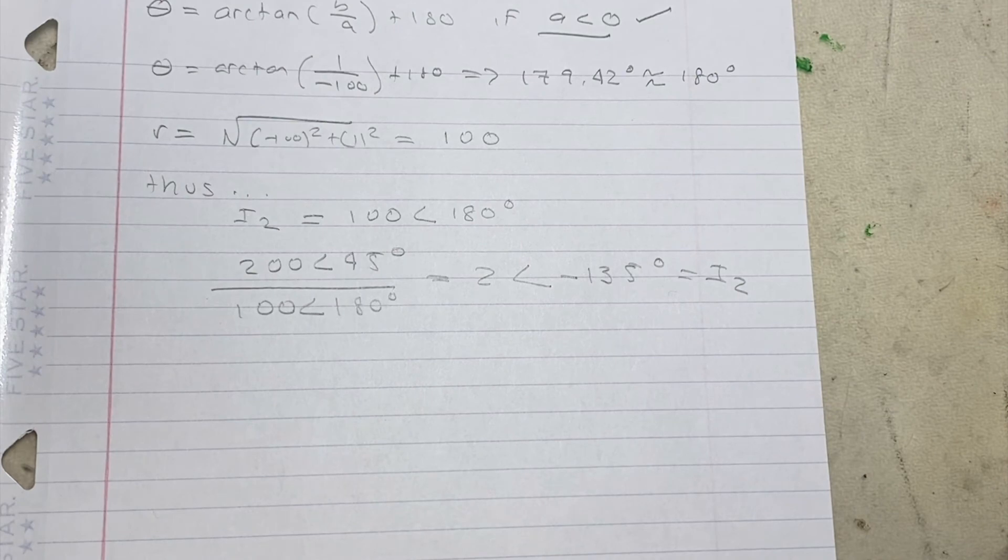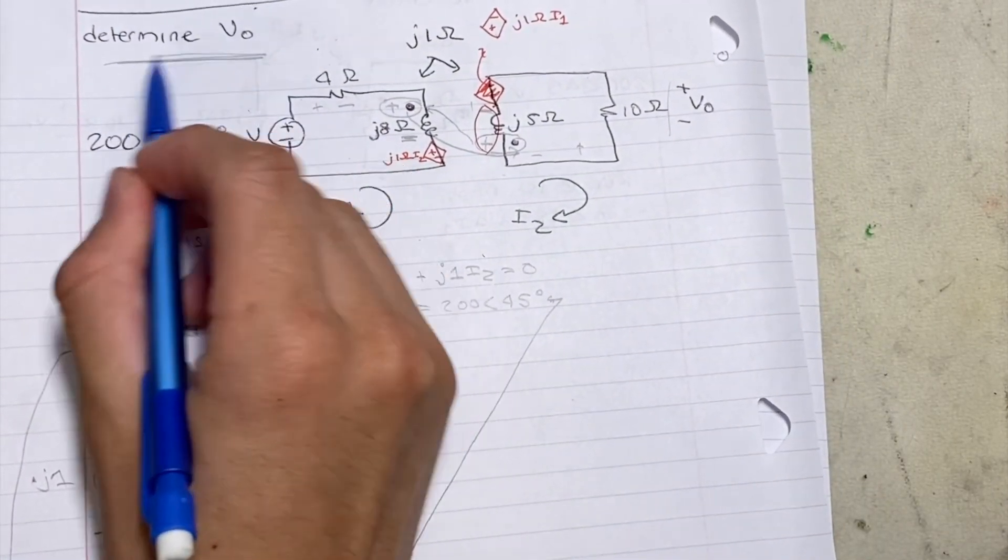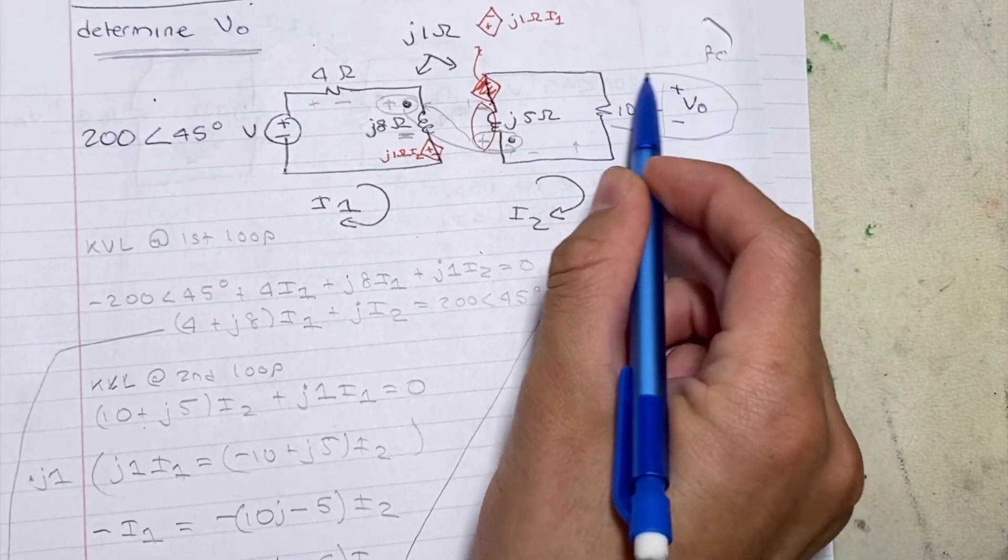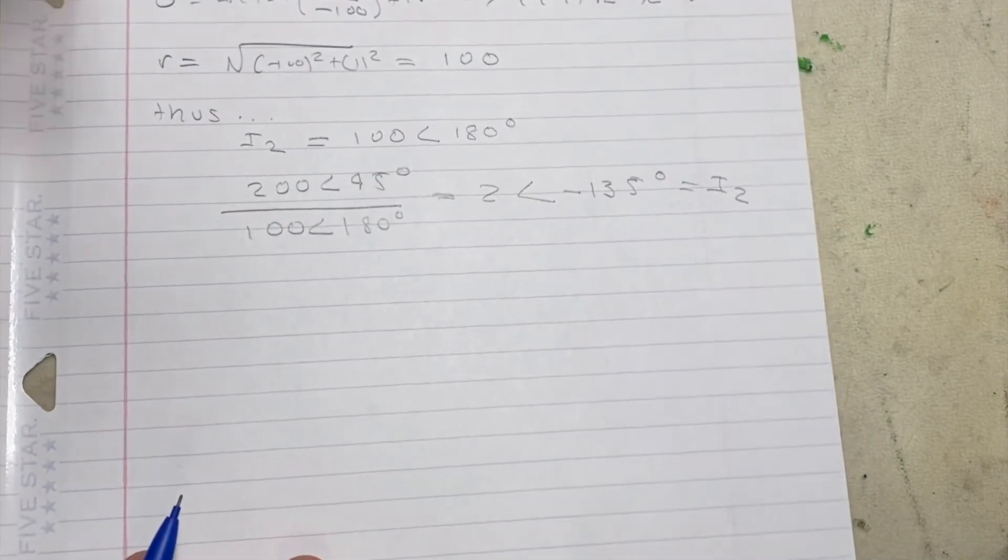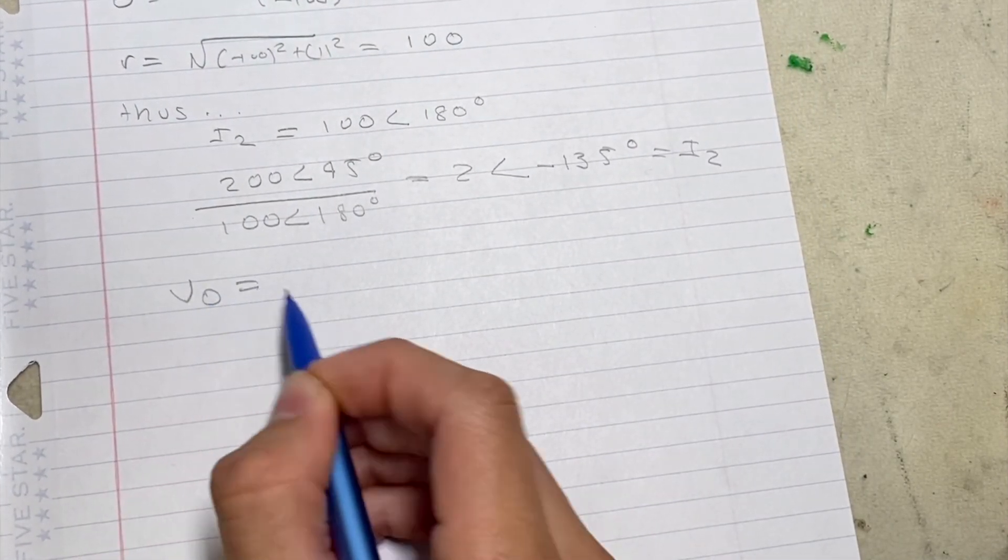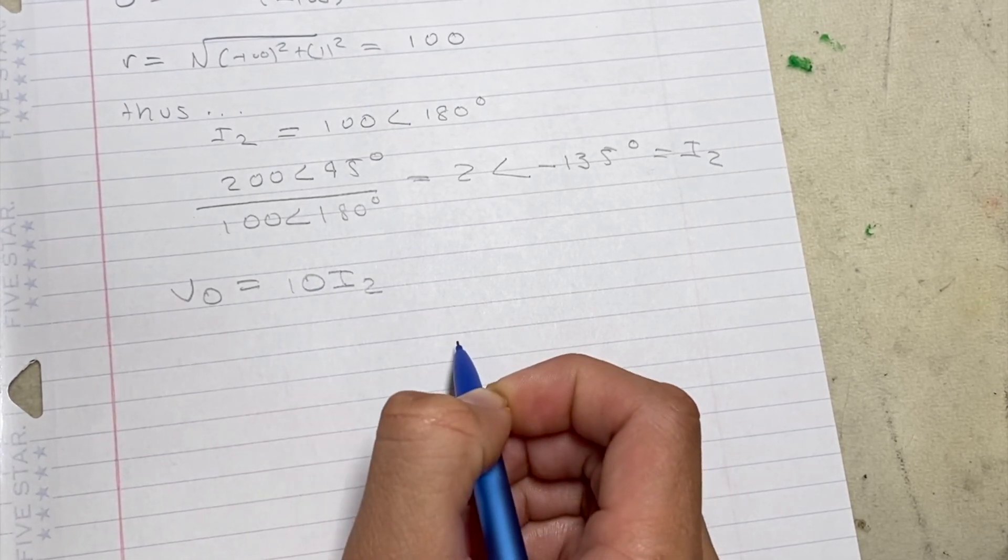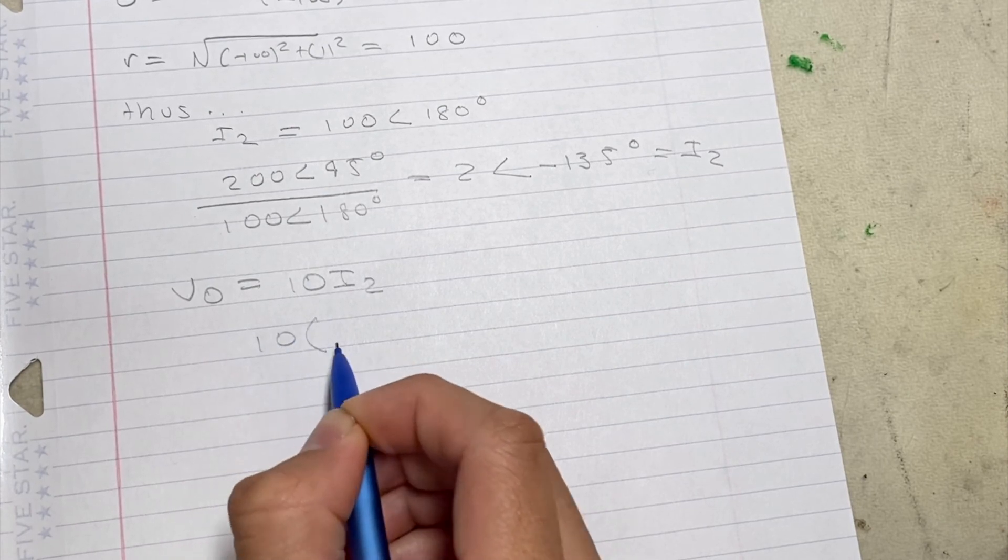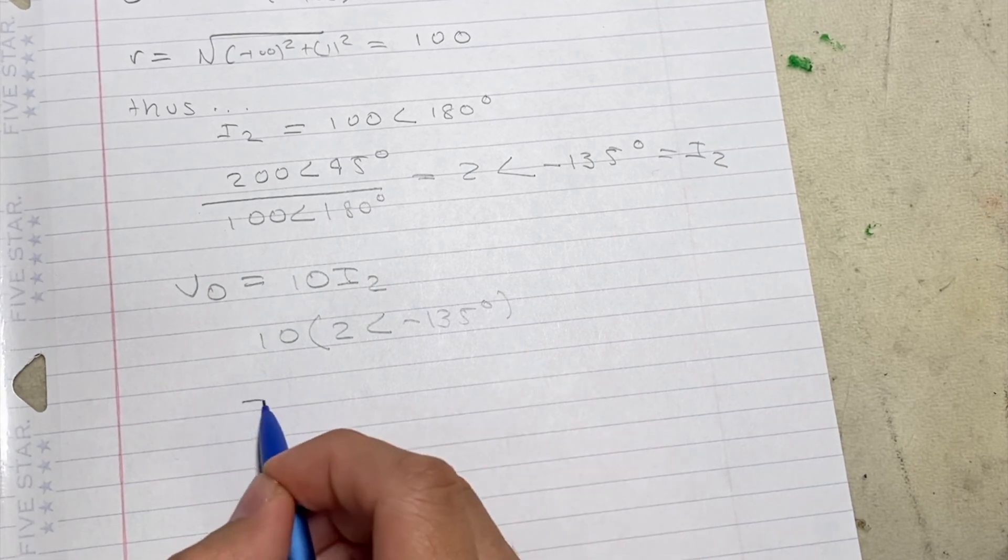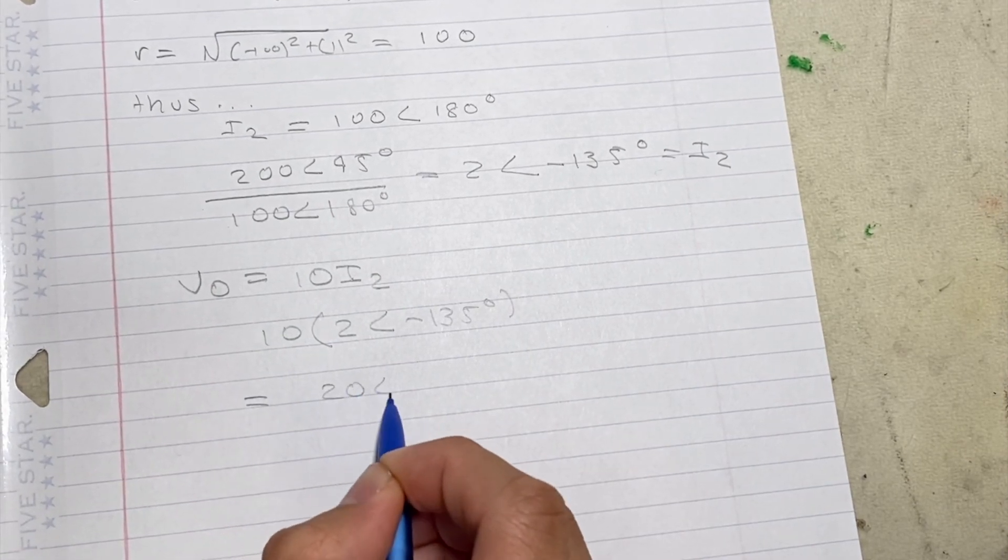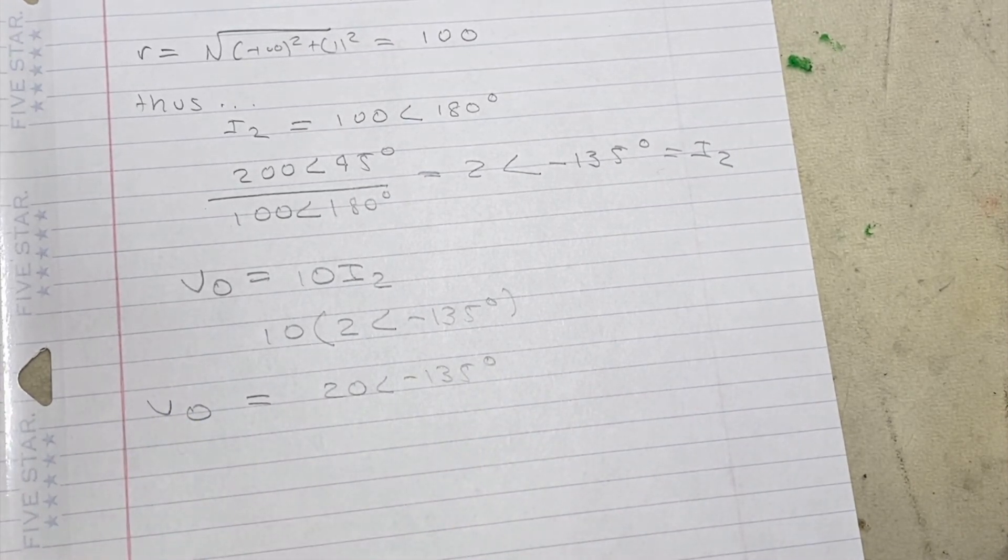Now if we refer back to the original problem we can see that we're solving for V0 and from here the V0 is part of the I2 loop. So from here we can write V0 is equal to 10 which is the resistance of the resistor times the current I2. 10 times I2 which we solved for which is 2 angle negative 135 degrees is equal to 20 angle negative 135 degrees and that's our solution.